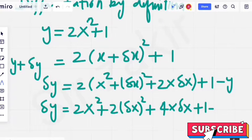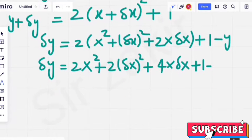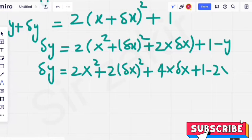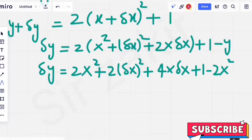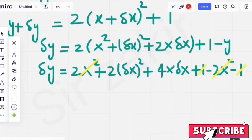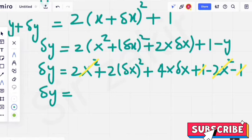What is y? We can see y is 2x square plus 1. So both will be with minus sign here. 2x square minus 1. We can see that this 2x square cancels this 2x square. 1 cancels 1.